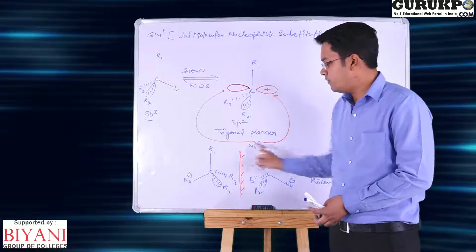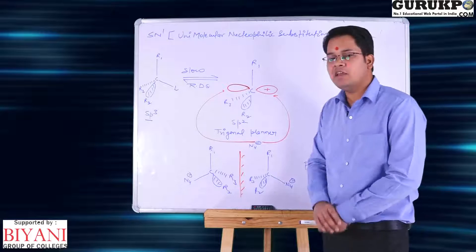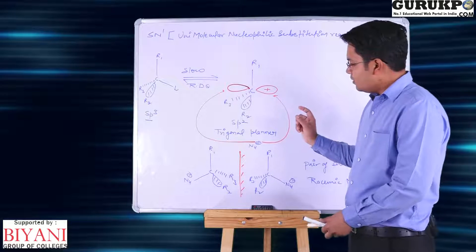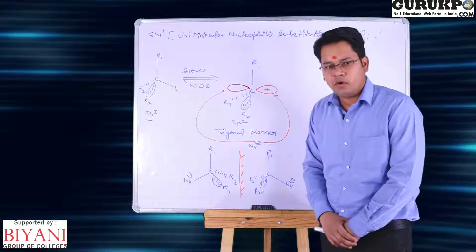Two isomers will be formed and these are pair of enantiomers and racemic mixture. During the reaction intermediate carbocation is formed.